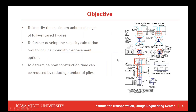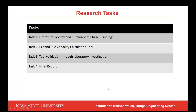The objective of our current project is, first, to identify the maximum unbraced height of fully encased H-piles. Secondly, to further develop the capacity calculation tool to include the monolithic encasement options. And lastly, to determine how construction time can be reduced by reducing the overall number of piles. The research tasks include: completing a literature review and summary of phase one findings, which we've completed; expanding the pile capacity calculation tool, which is largely complete; laboratory validation of the pile capacity tool later this year; and finally, our final report.